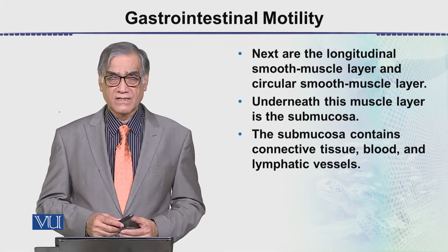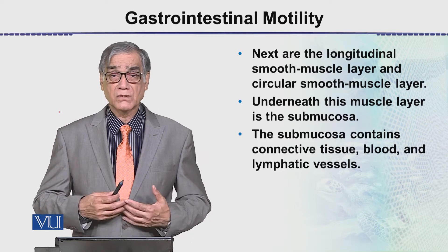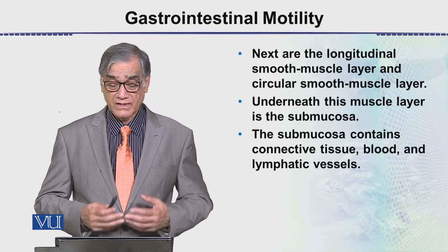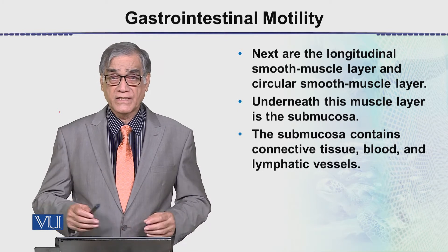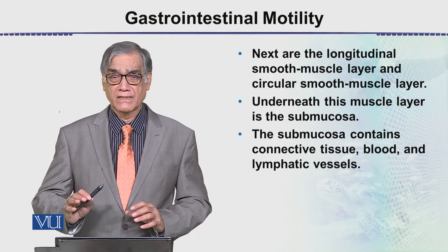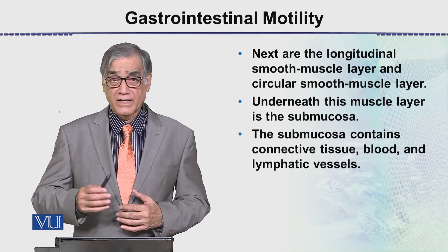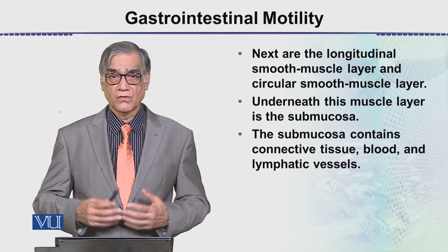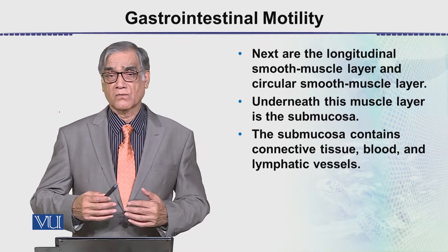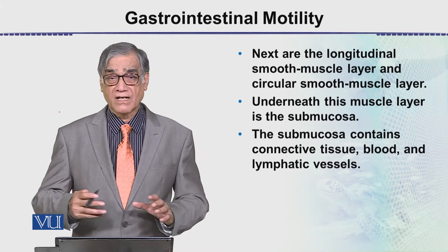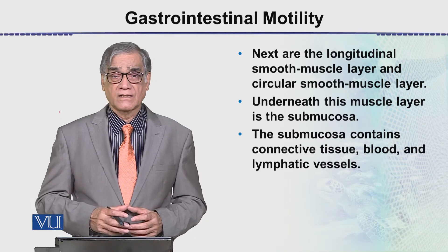Next is the muscle layer, which consists of longitudinal muscles and circular muscles. These two muscle types have coordination, and through the coordinated activity of these muscles, food moves along the intestine. If there is no coordination, then the peristaltic pushing of food will be blocked, which is literally very problematic.